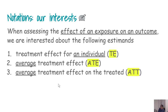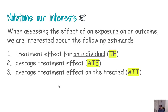There are three different types of effect of an exposure on an outcome. We already talked about the average treatment effect (ATE) and the average treatment effect on the treated (ATT). We also have a treatment effect for an individual — this is not an average but individualistic — and we call it the treatment effect, or TE.